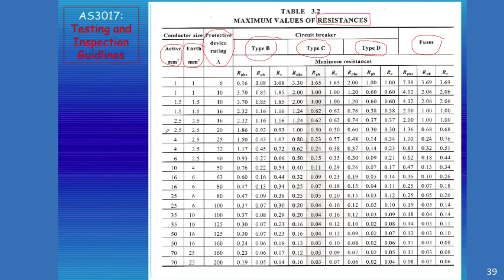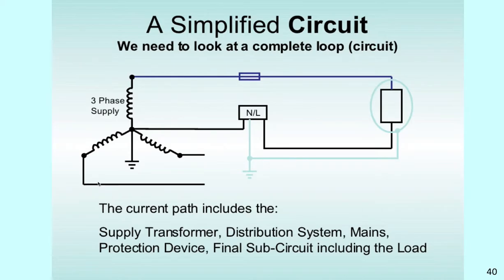The one that we just looked at was a current rating of 20 amps. So, assuming that was being used on a final sub-circuit, and we had two and a half square mil for the active, and the Earth was also two and a half square mil at 20 amps. And we're using a C-type circuit breaker. We would be looking in here. And if we're looking at the whole loop, the protective, the phase and the protective Earth combined, the whole loop combined is this one. So, everything would have to be less than one ohm.